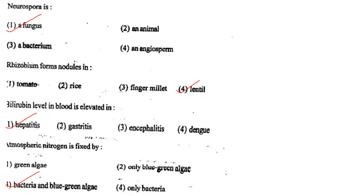Next one: Neurospora is option 1, a fungus; option 2, an animal; option 3, a bacterium; option 4, an angiosperm. Answer is option 1: a fungus.